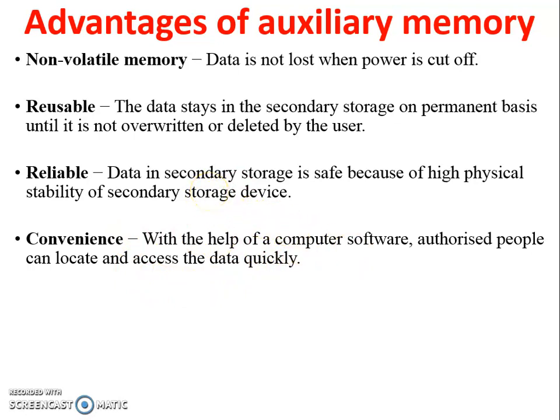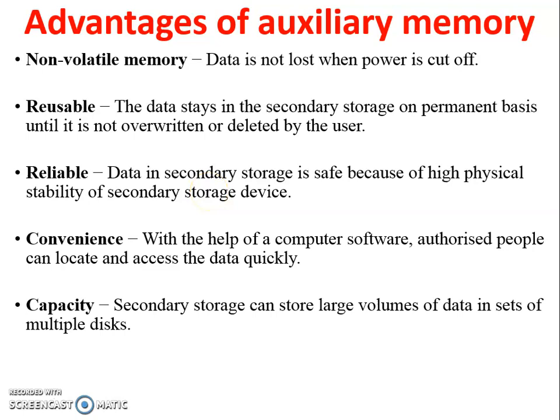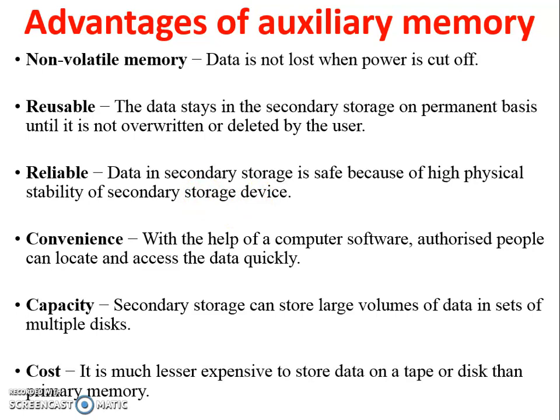Fourth, convenience — authorized people can lock it and access the data quickly from any PC or computer system. Fifth, capacity — secondary storage can store a larger volume of data across multiple disks; pen drive and hard disk are the best examples of auxiliary memory. Sixth, cost — cost is very less compared to primary memory, so you can purchase a maximum number of bytes at low cost.